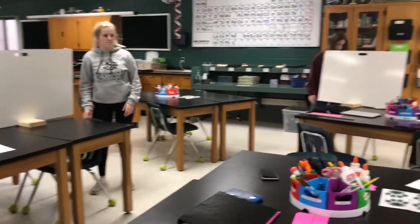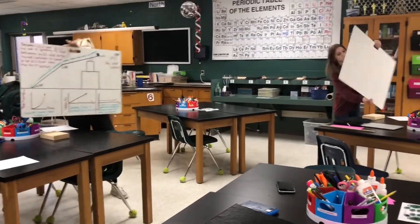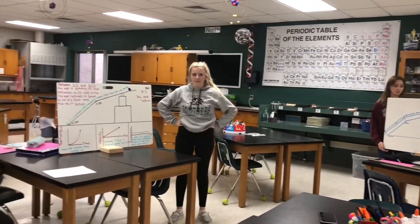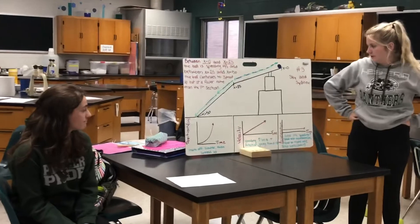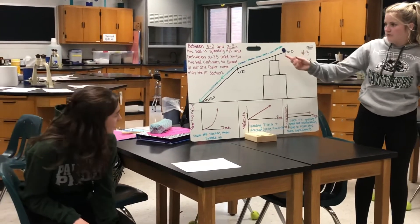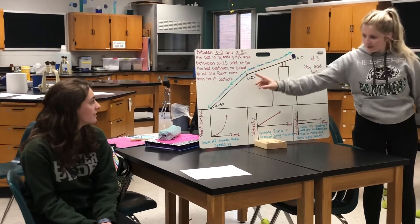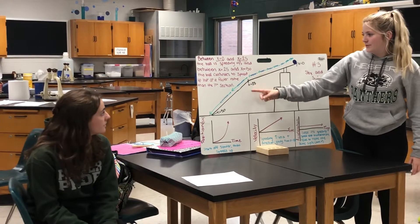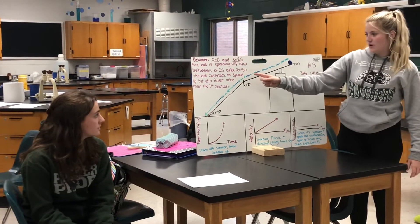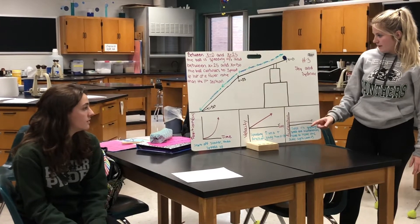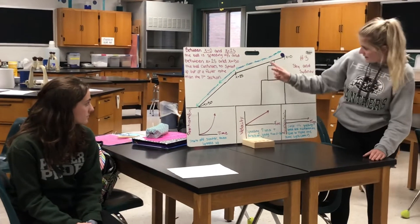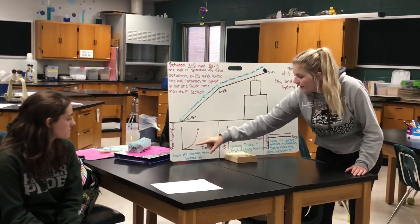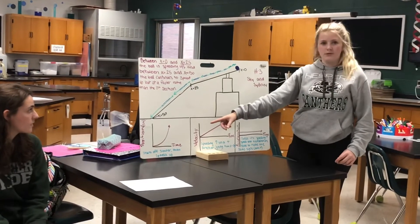Big reveal — number threes. Turn your boards around so we can take a look. All right, Sydney and Skye, why don't you guys start. Okay, so the ball was speeding up, and then it sped up faster — that's pretty much what this is saying right here. Between zero and 25 it's speeding up; between 25 and 50 it continues to speed up but at a faster rate. So we had the position-time graph like that — it started slower and then sped up more.